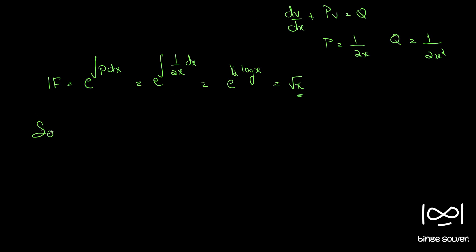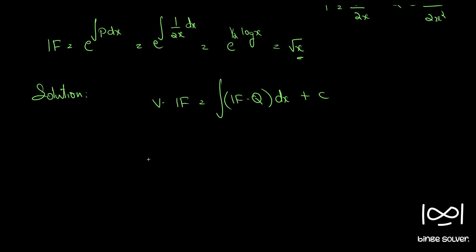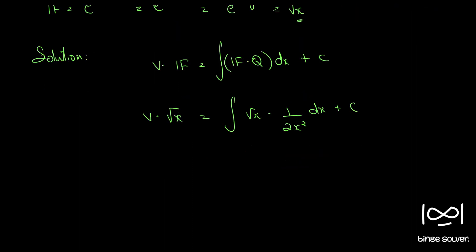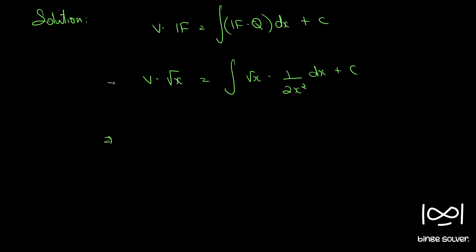The solution to such a differential equation is given by v into integrating factor equals integral of integrating factor into q dx plus c. So we have v into root x equal to integral of root x into q, which is 1 by 2x squared, dx plus c.